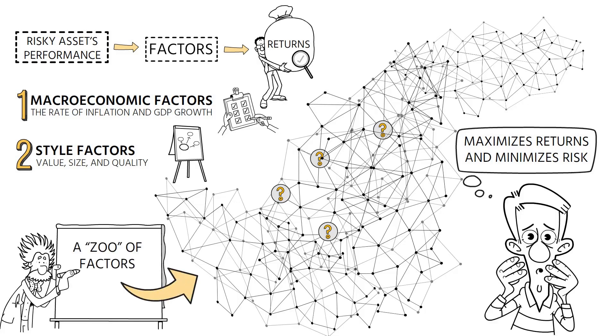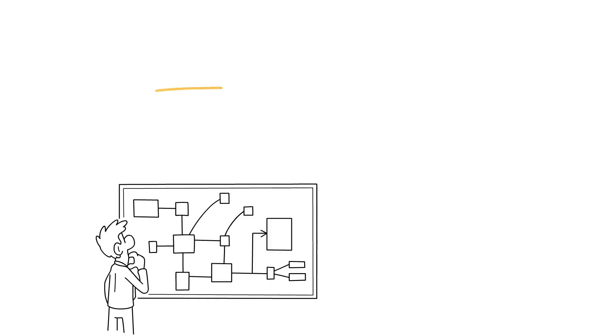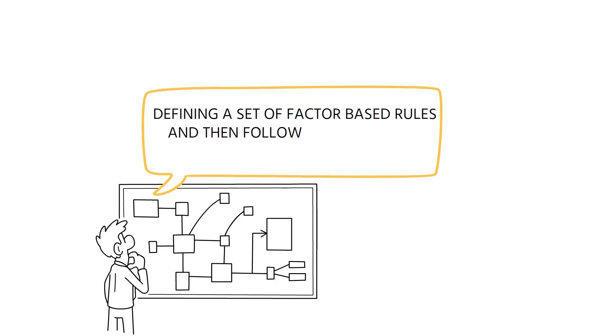The first step in devising a machine learning financial theory is to identify the right exhibits in this zoo. A factor-based investment strategy typically involves defining a set of factor-based rules, and then following those rules to build diversified portfolios.